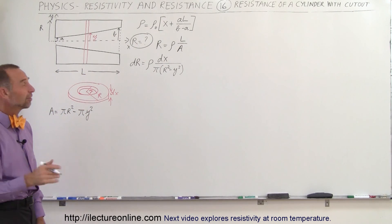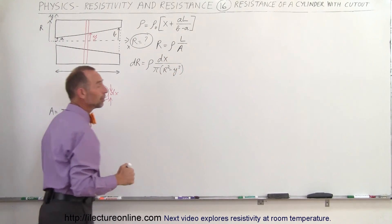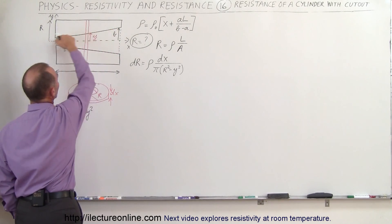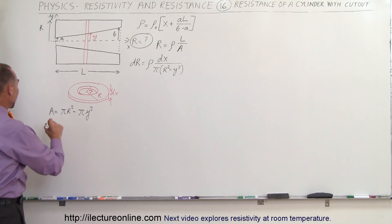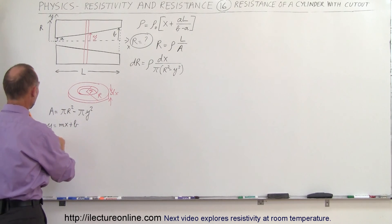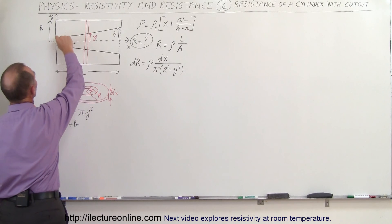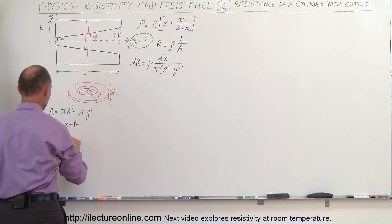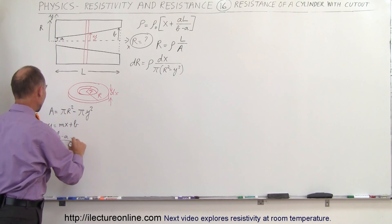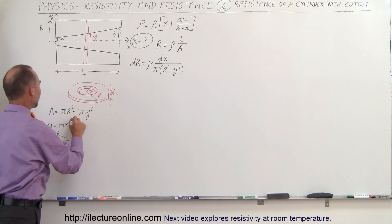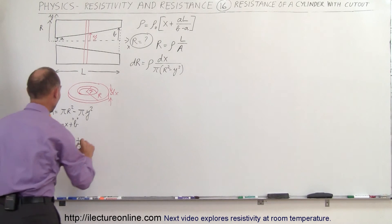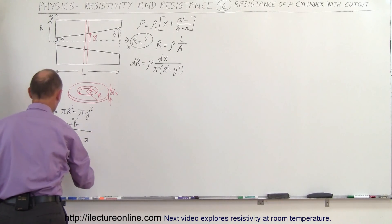R is a constant, but Y is a variable — and Y is not the same variable as DX, so we have to relate the two. This boundary line looks like a straight line, like Y equals MX plus B. The slope is the rise over the run: the rise goes from A to B, giving B minus A, and the run is L. The Y-intercept is A, so Y equals (B minus A)/L times X plus A.